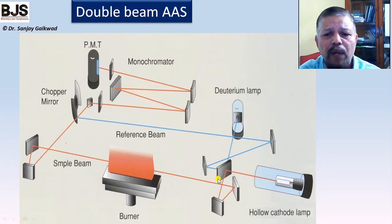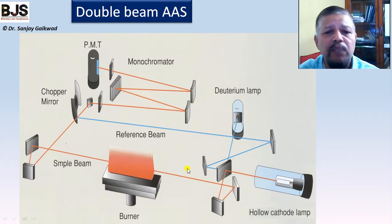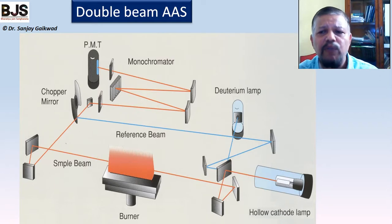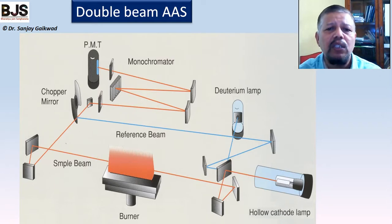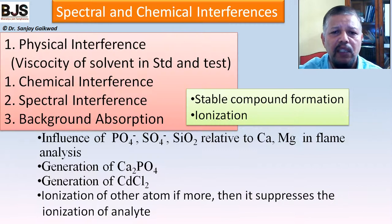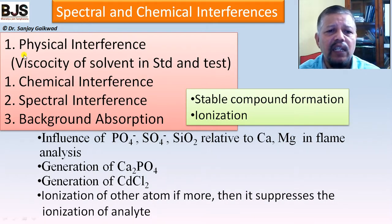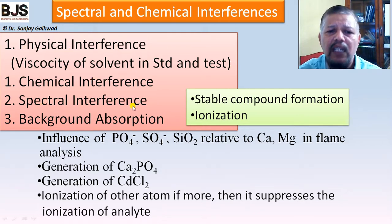In the double beam spectrophotometer, one beam passes through the sample flame and another through a reference beam. By comparison with a standard solution simultaneously, we can measure the concentration of metal ions in the solution.